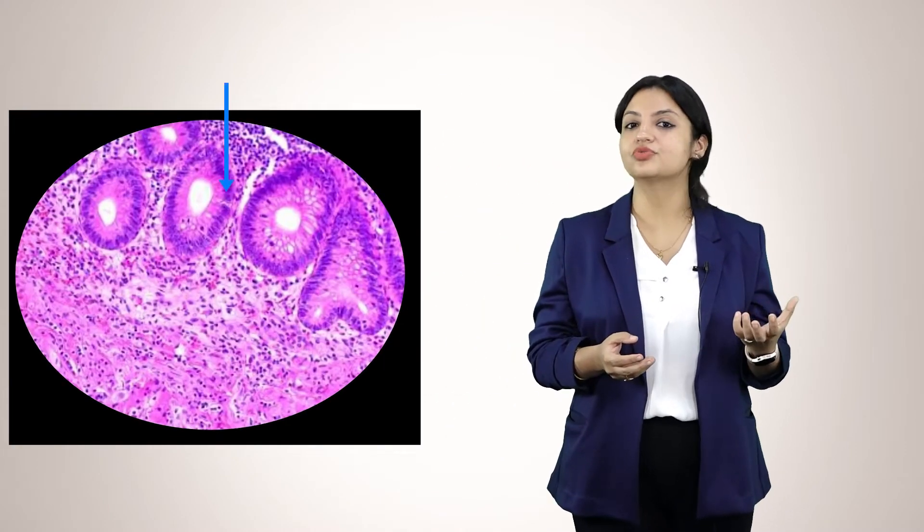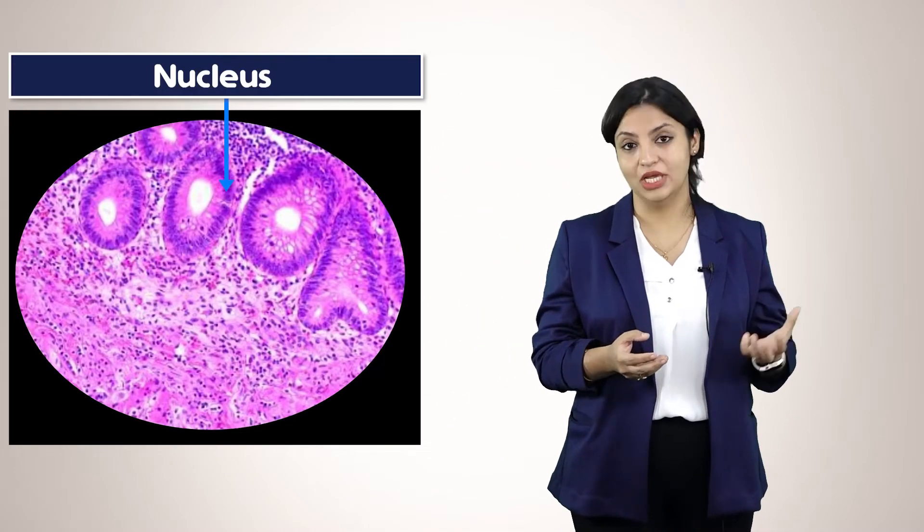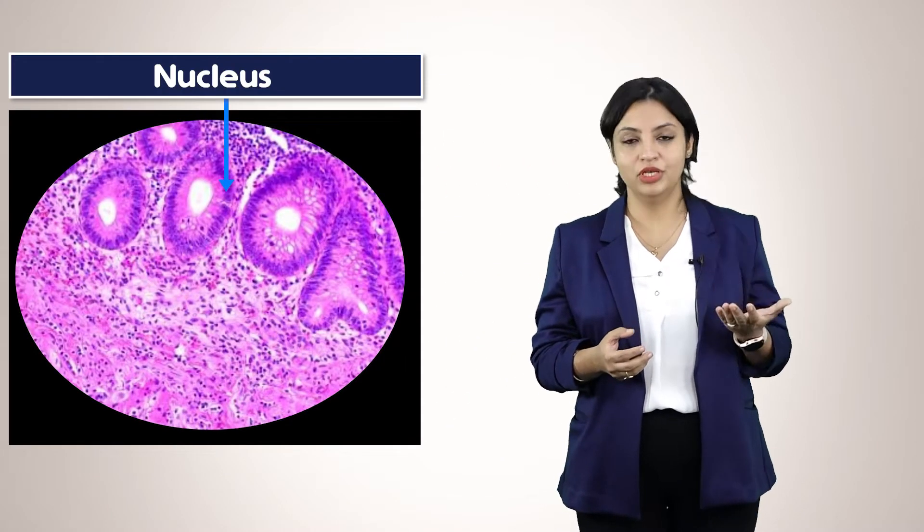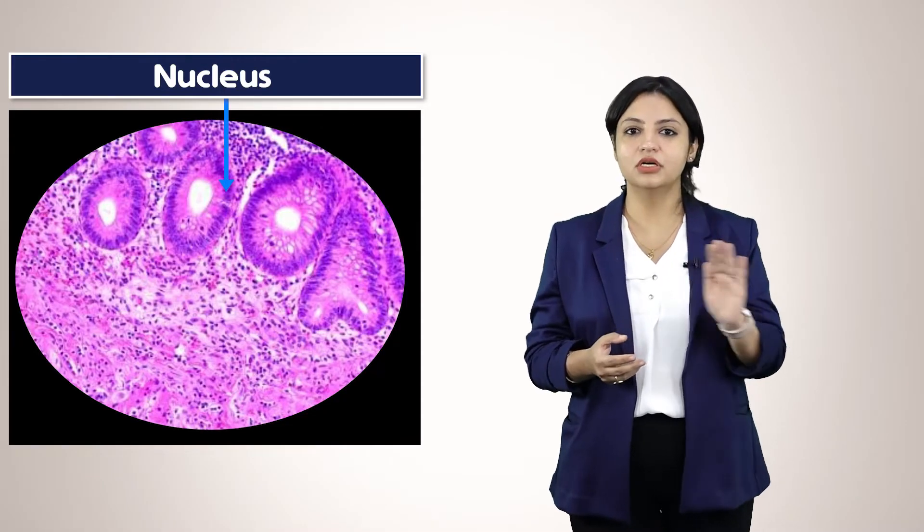Then look at the stain quality. Normally we use hematoxylin and eosin stain. Hematoxylin gives a blue color, which is usually given to the nucleus. You should know the normal shade of blue by looking at normal slides — you will learn that slowly. Pink is usually given to the cytoplasm.